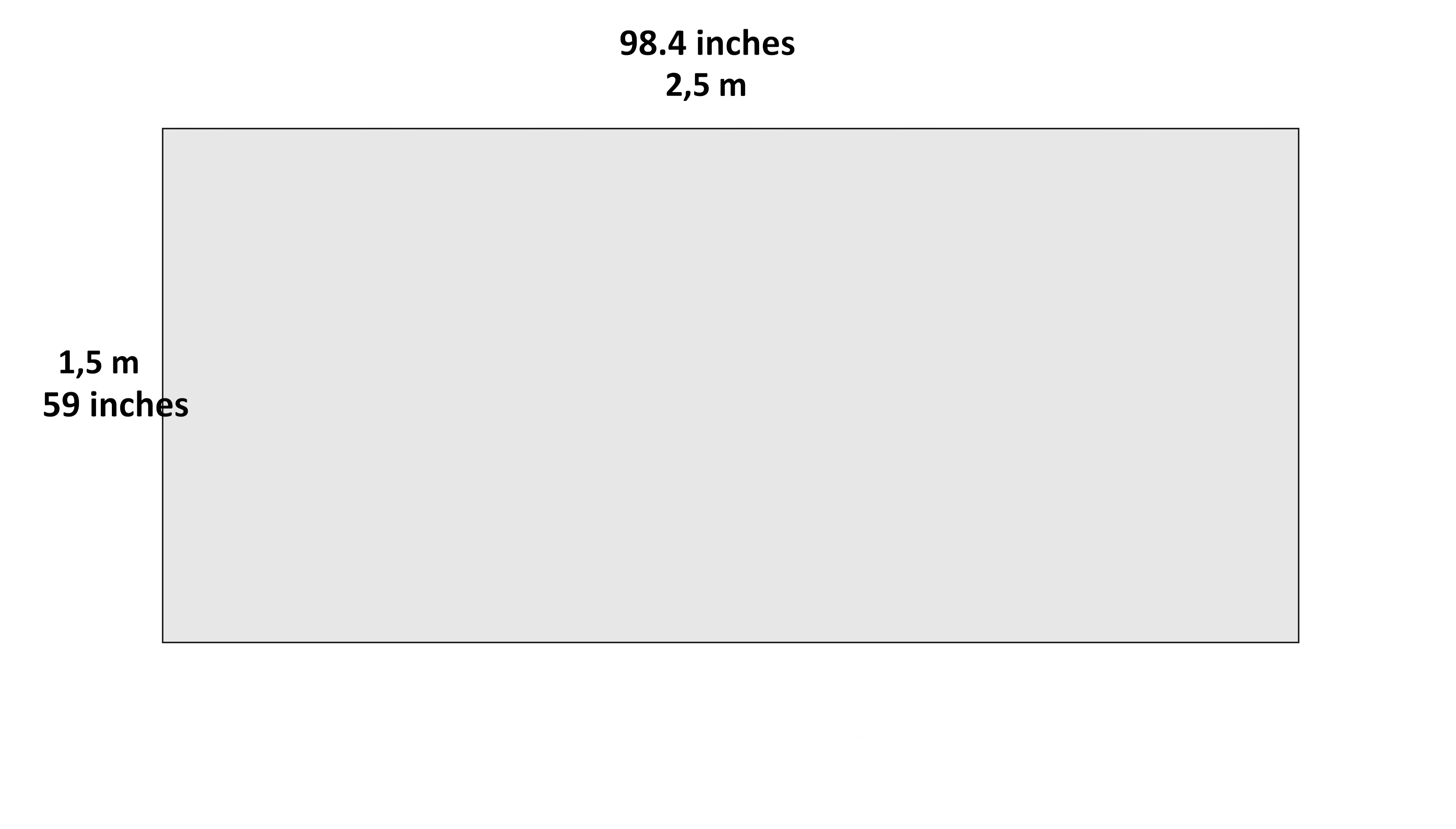Cut a tulle fabric piece, 2.5 meters, 98.4 inches long, with a width of 150 centimeters, 59 inches. Round the corners of this rectangular piece. For the classic style of the veil, cut the corners in a circle with a radius of 75 centimeters, 29.5 inches. 75 centimeters is half the width of the fabric.